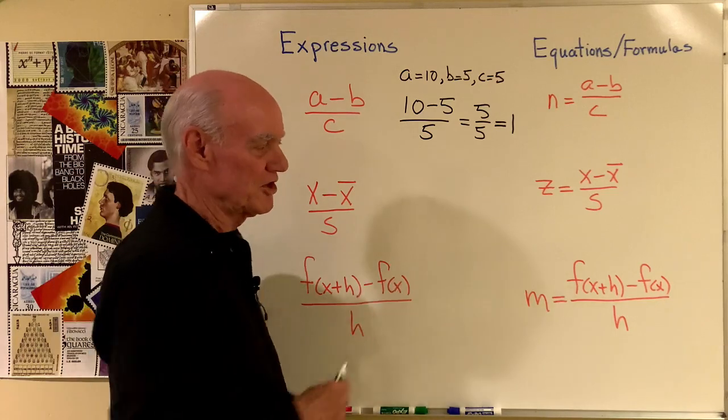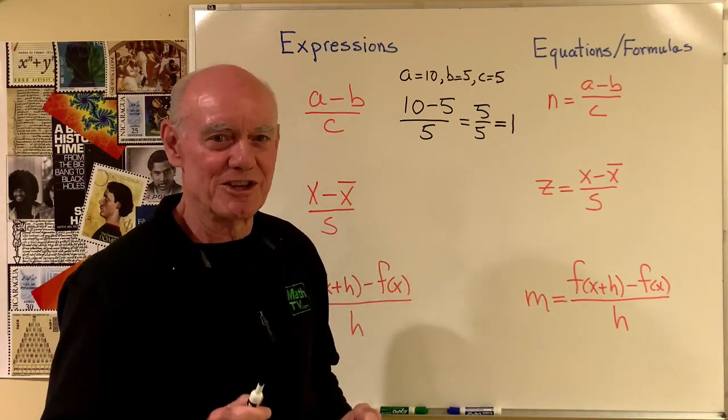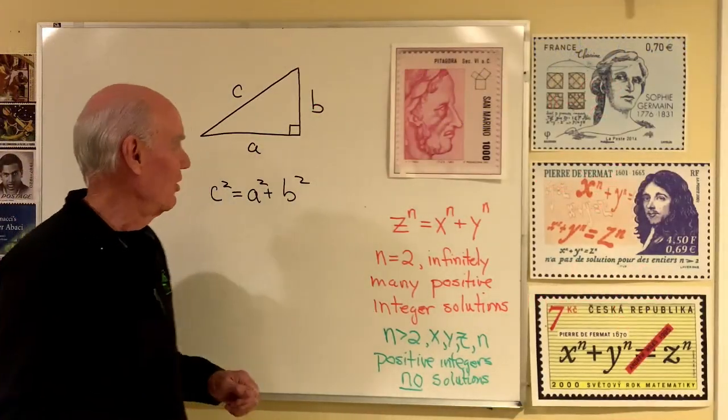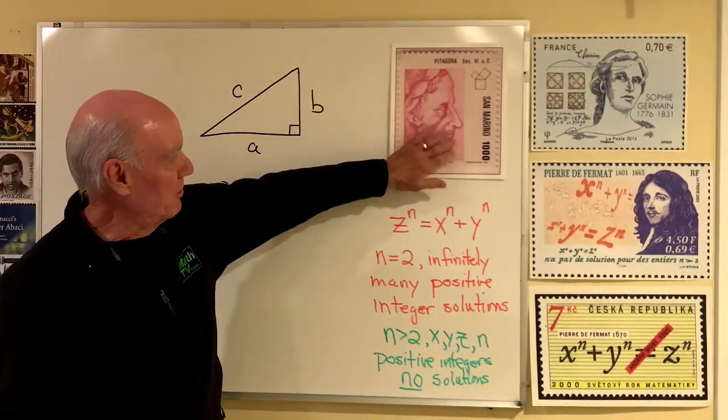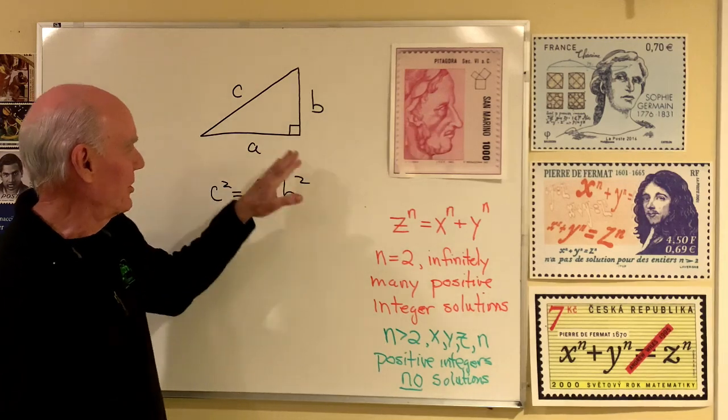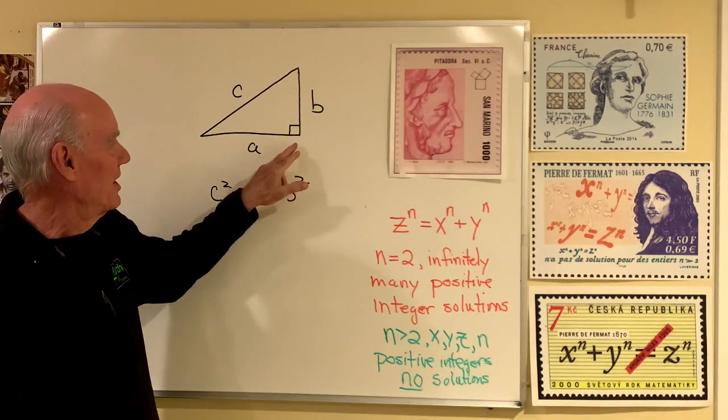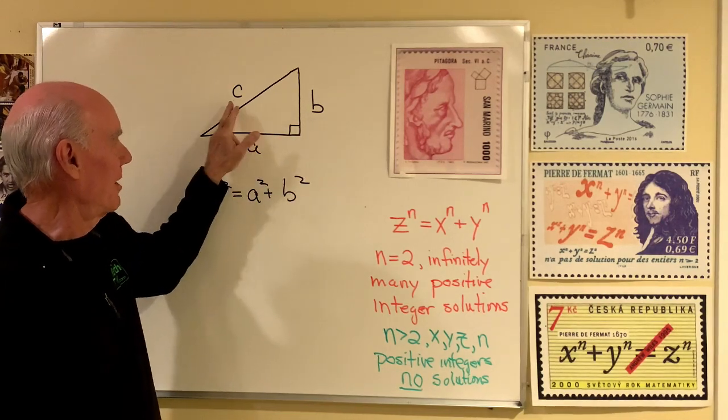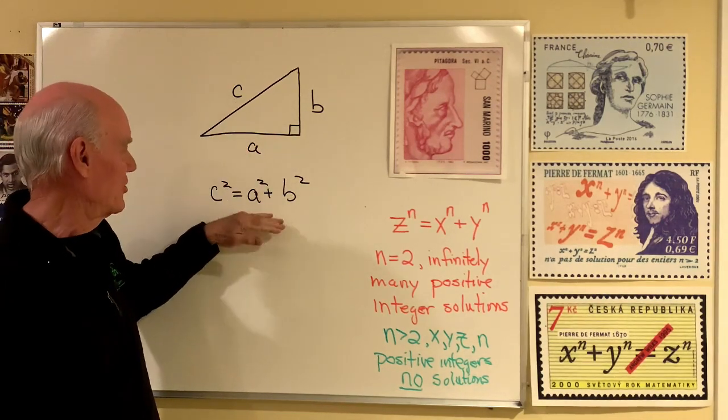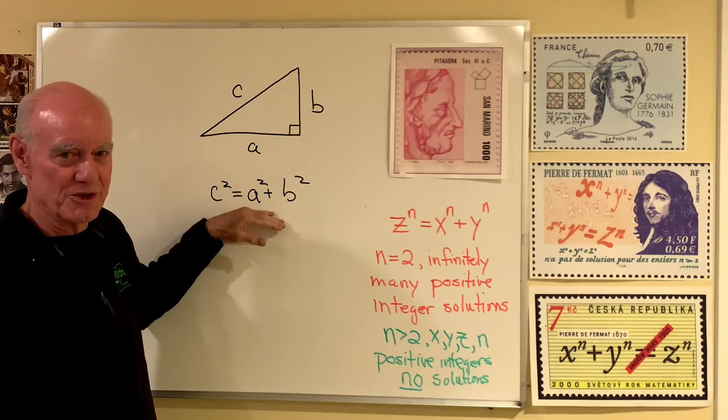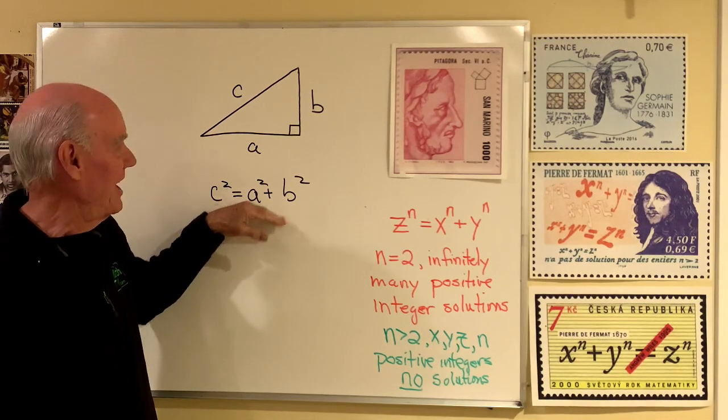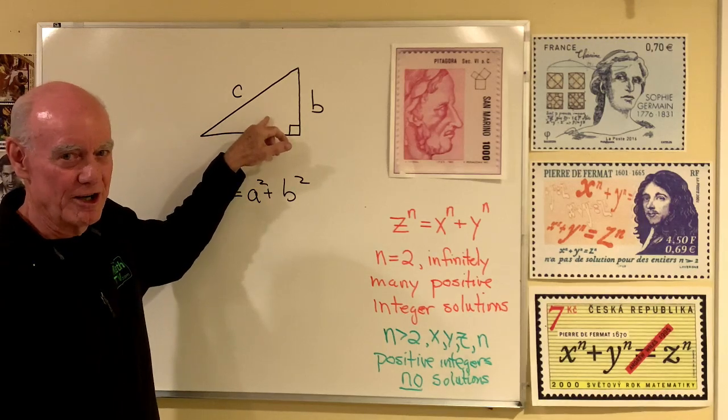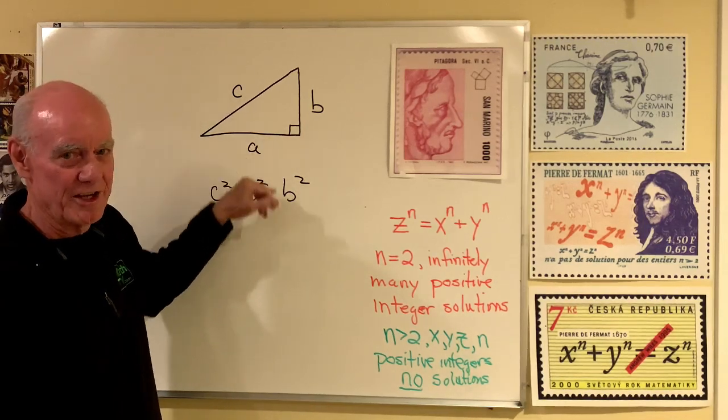I'm going to erase this and come back. We're going to look at the Pythagorean theorem and Fermat's last theorem. We're back. And so here's a little postage stamp with Pythagoras on it. And the Pythagorean theorem says this. If you have a right triangle and the two legs are A and B and the hypotenuse is C, then it's always true that C squared equals A squared plus B squared. And if you have a triangle for which this is true, that must be a right triangle. So you can't have one without the other.